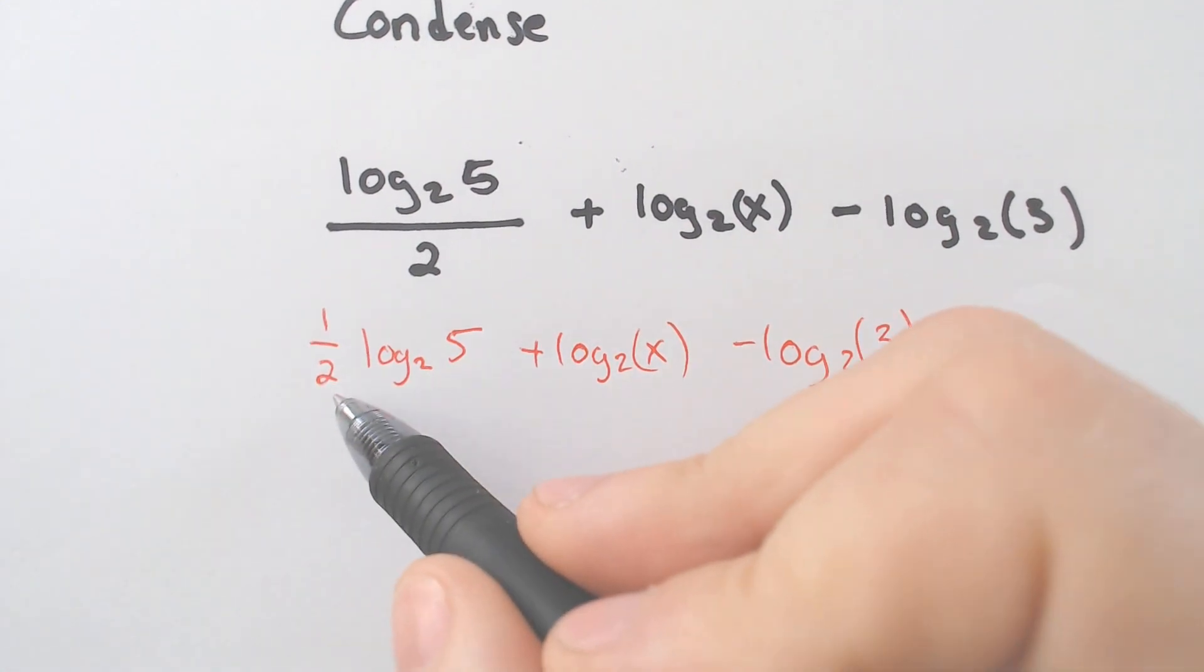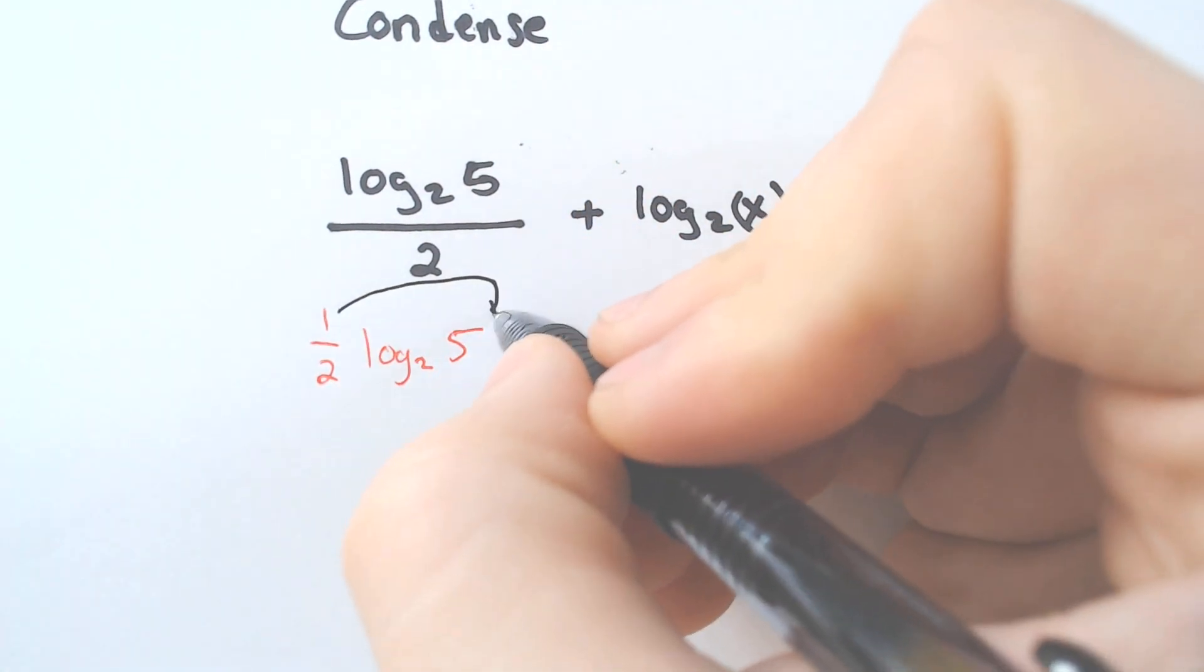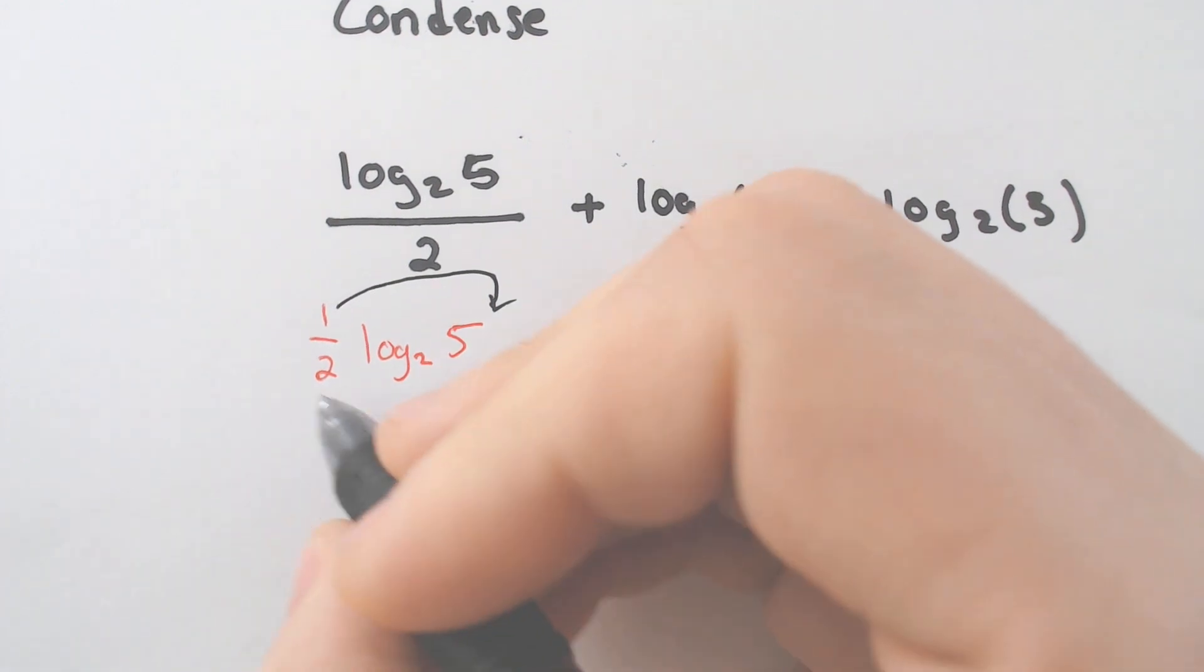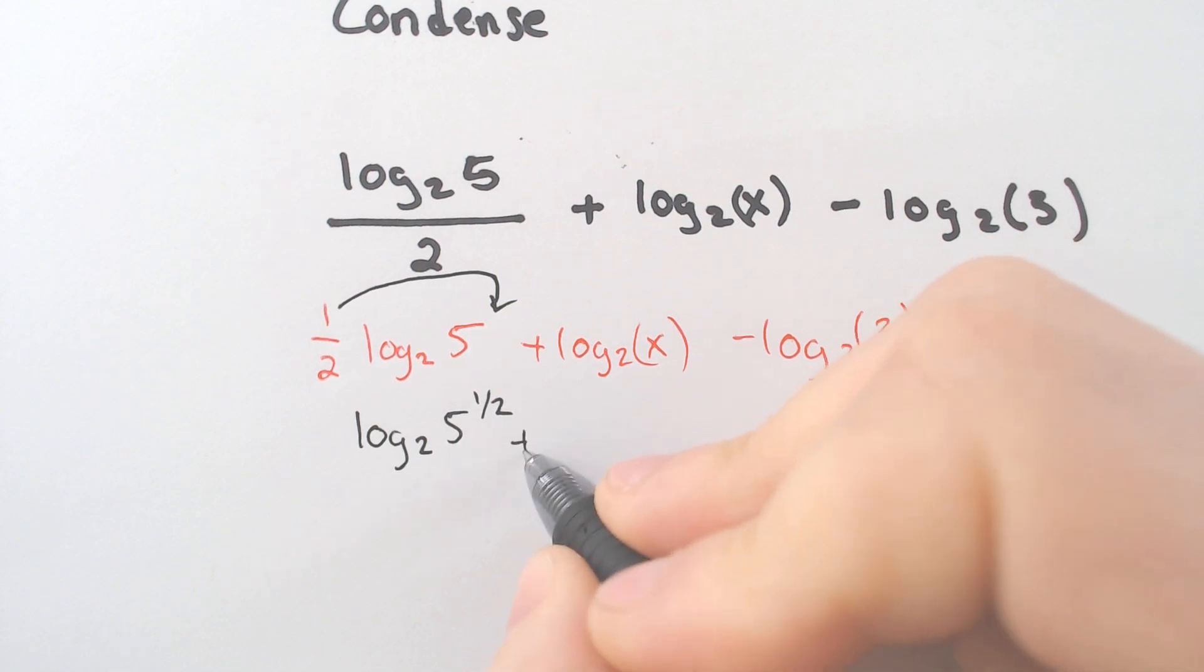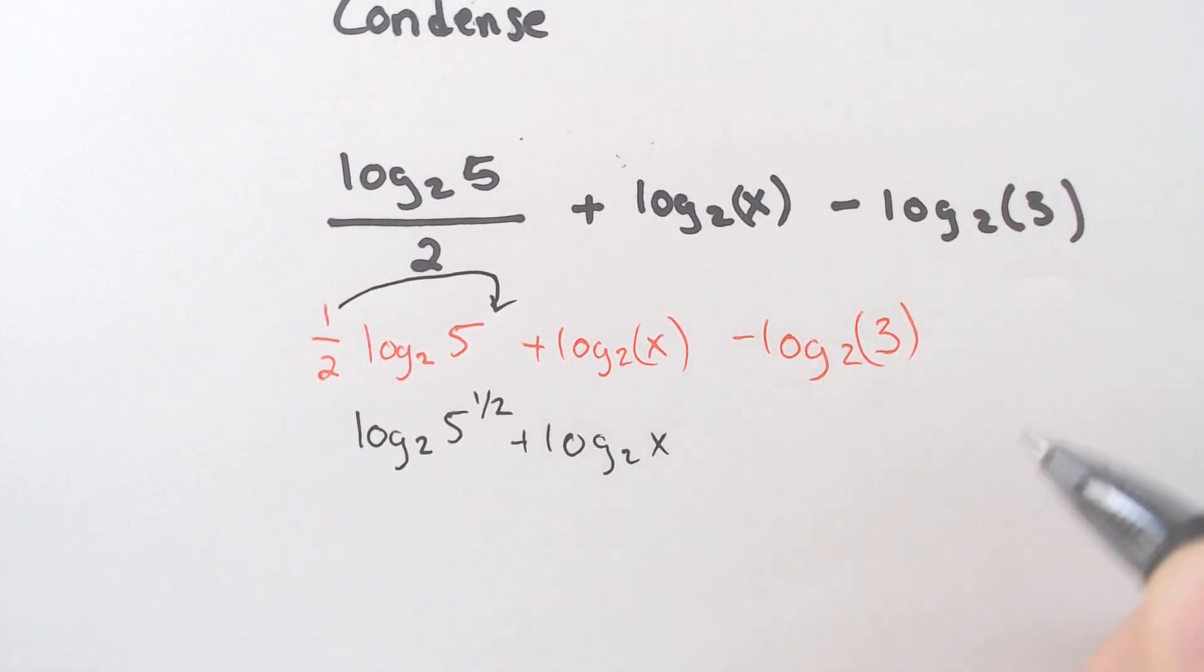Parentheses aren't necessary, by the way. They're just for show. So if there's a one half here, just like the last problem, we have to make it an exponent. And if we do that, we get log 2, 5 to the one half power. Log 2 of x. And minus log 2 of 3.